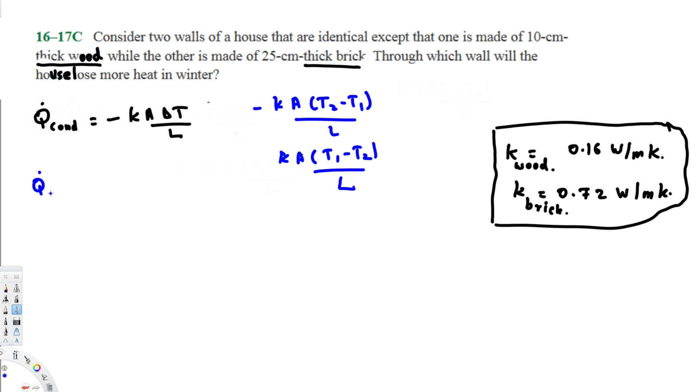Q̇_conduction for wood is going to be equal to k A (T1 minus T2) over L. The k value is given by 0.16 times the area times (T1 minus T2) over the length. The length of the wood is given by 10 centimeters, that is the same as 0.1 meter.